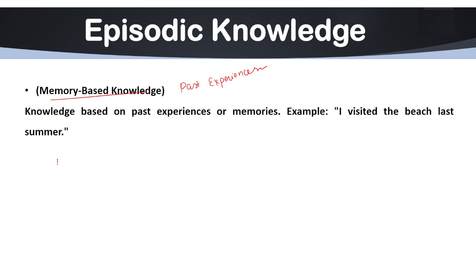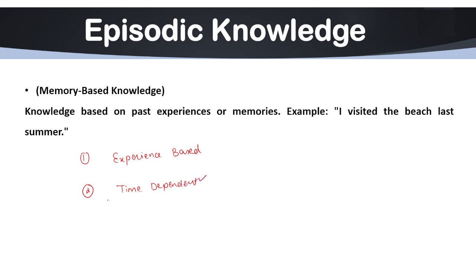The characteristics of episodic knowledge include: first, it is experience-based — AI learns from previous interactions and events. Second, it is time-dependent — it remembers when and where an event happened. Third, it is personalized — AI adapts based on users' past preferences and gives results based on your previous searches. Fourth, it is continuously updated — AI modifies its knowledge based on new experiences.